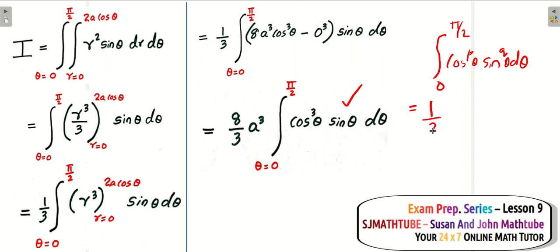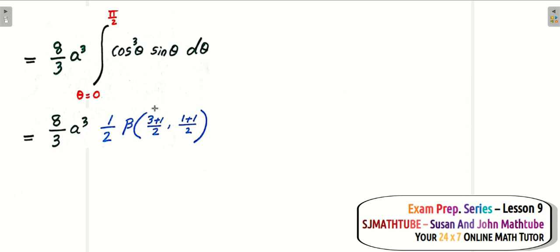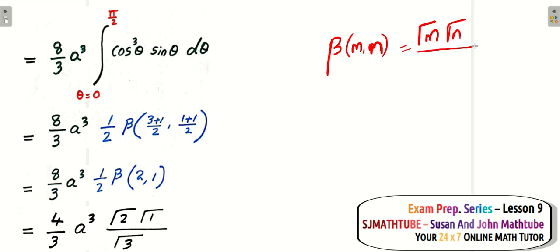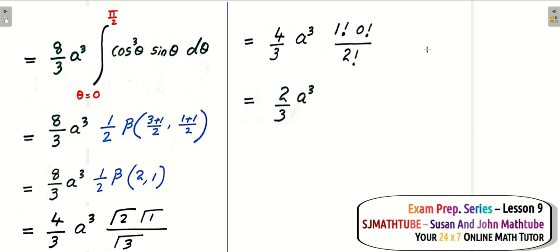The formula is one half times beta of (p+1)/2 and (q+1)/2. Here p equals 3 and q equals 1, giving one half times beta(2, 1). Using the connection between the beta function and the gamma function: beta(m, n) equals gamma(m) times gamma(n) divided by gamma(m plus n). That gives the final answer.